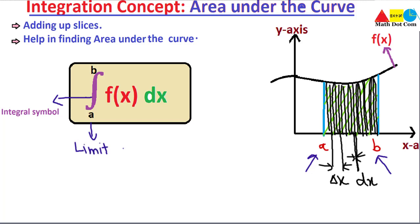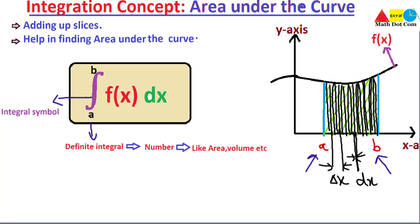One important point to keep in mind: the integration concept used for area under the curve applies only when you have limits, because you are given definite values and you get a definite value — not a function — at the end. There are two types of integration: definite integral and indefinite integral. For area under the curve, we always use the definite integral. The limits refer to the definite integral, which gives you a single number when solved.